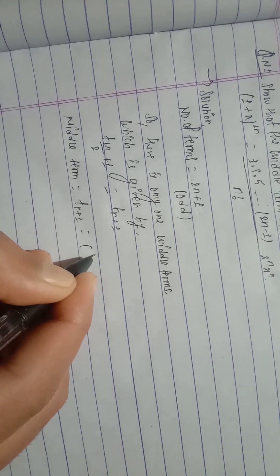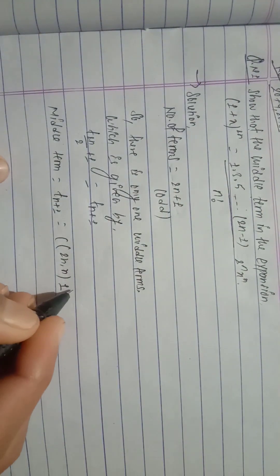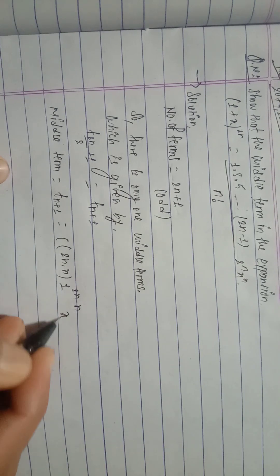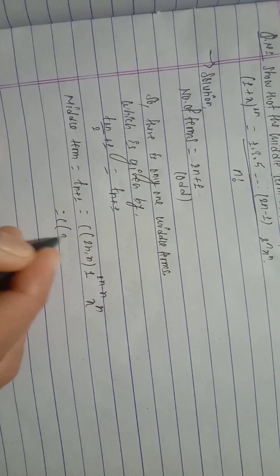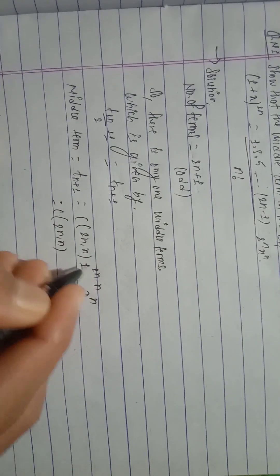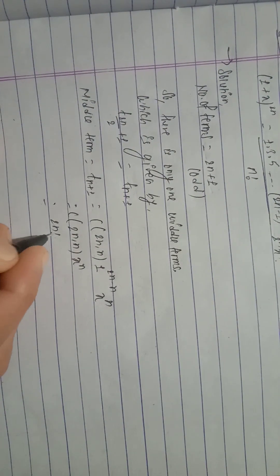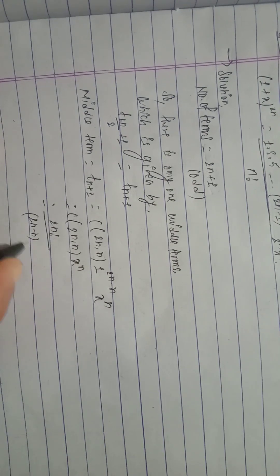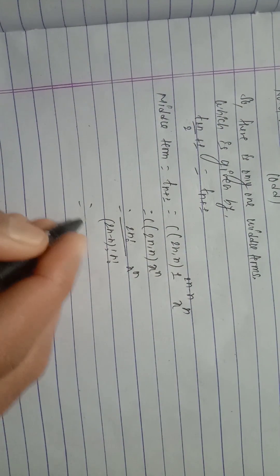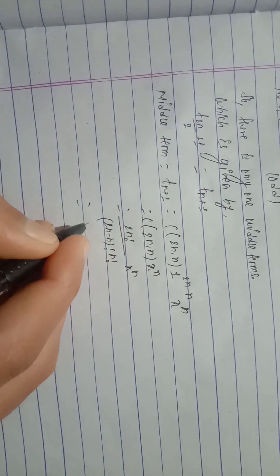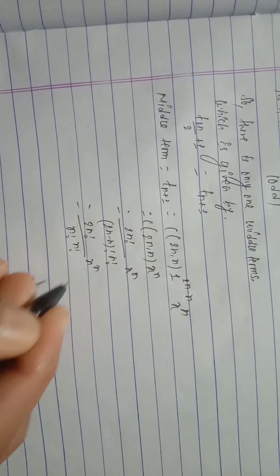Middle term is equal to C(2n, n) times x^n, which is equal to (2n)! divided by (2n minus n)! times n! times x^n. So it is equal to (2n)! divided by n! times n! times x^n.